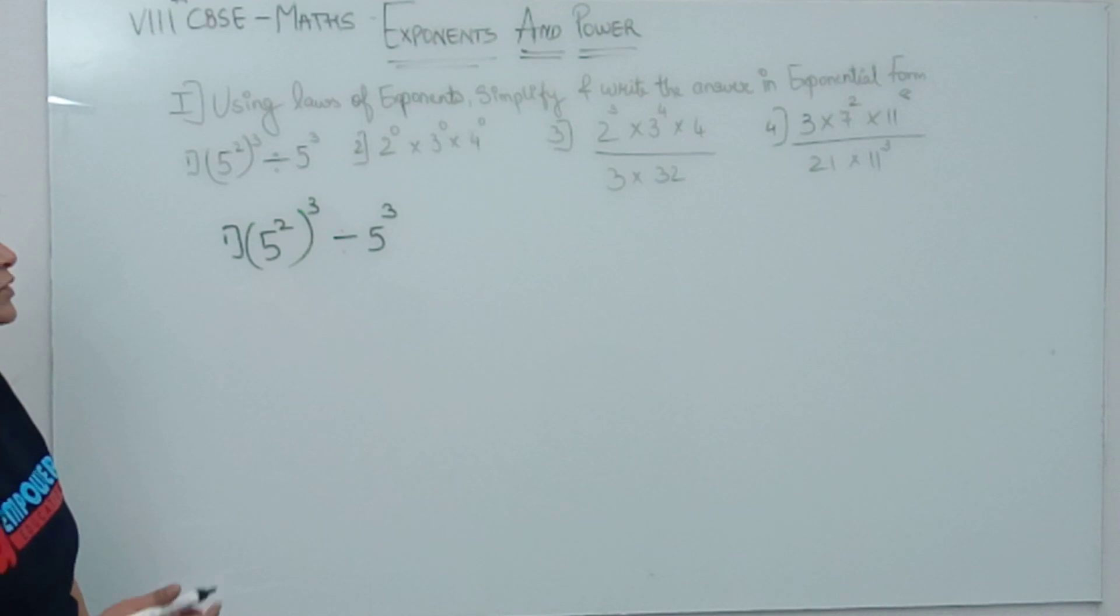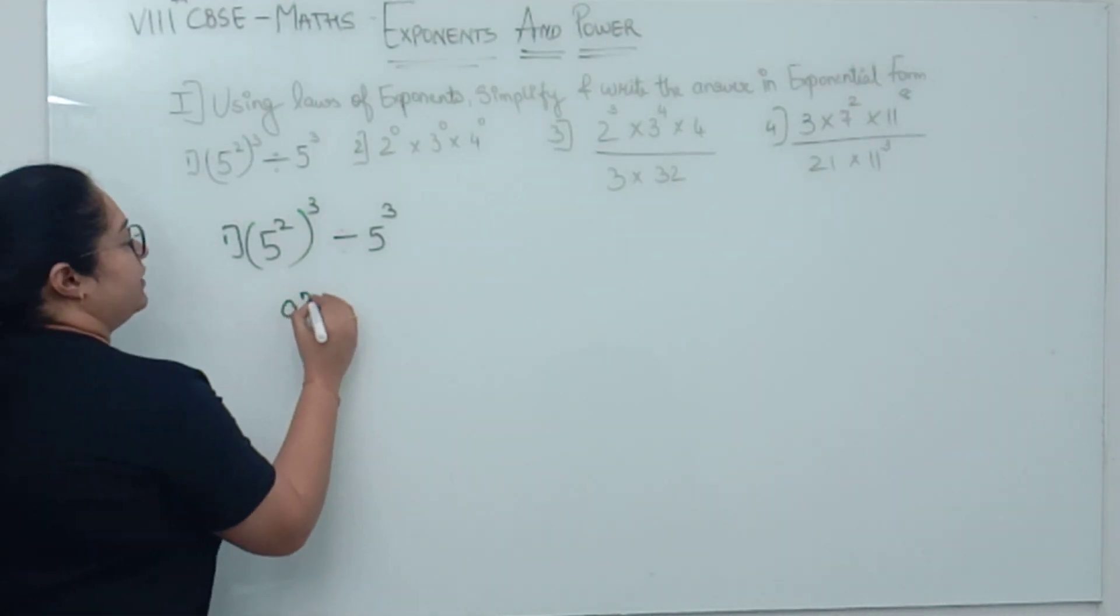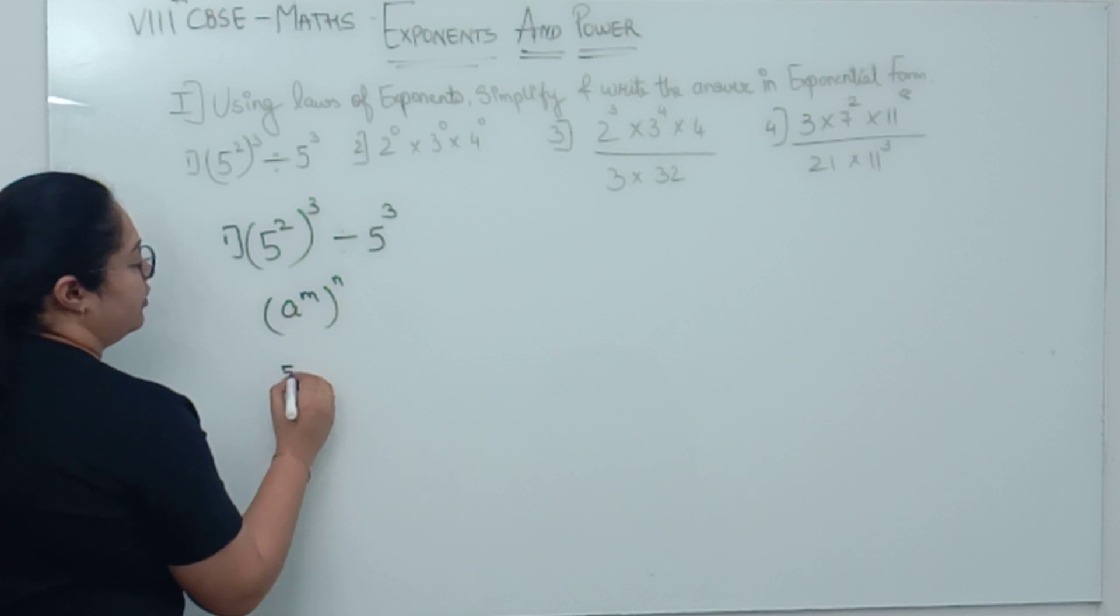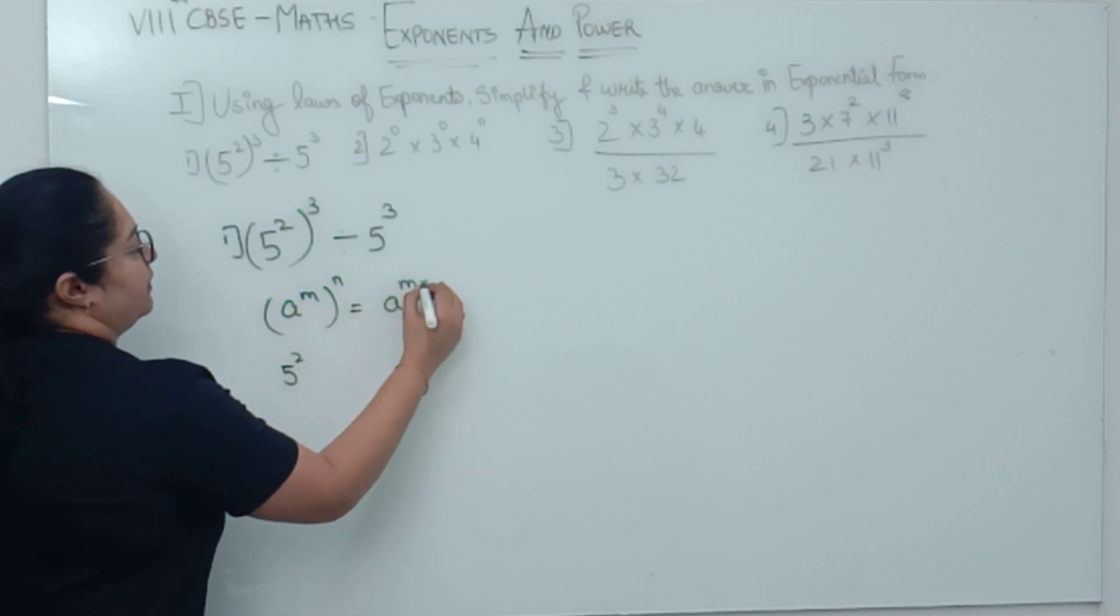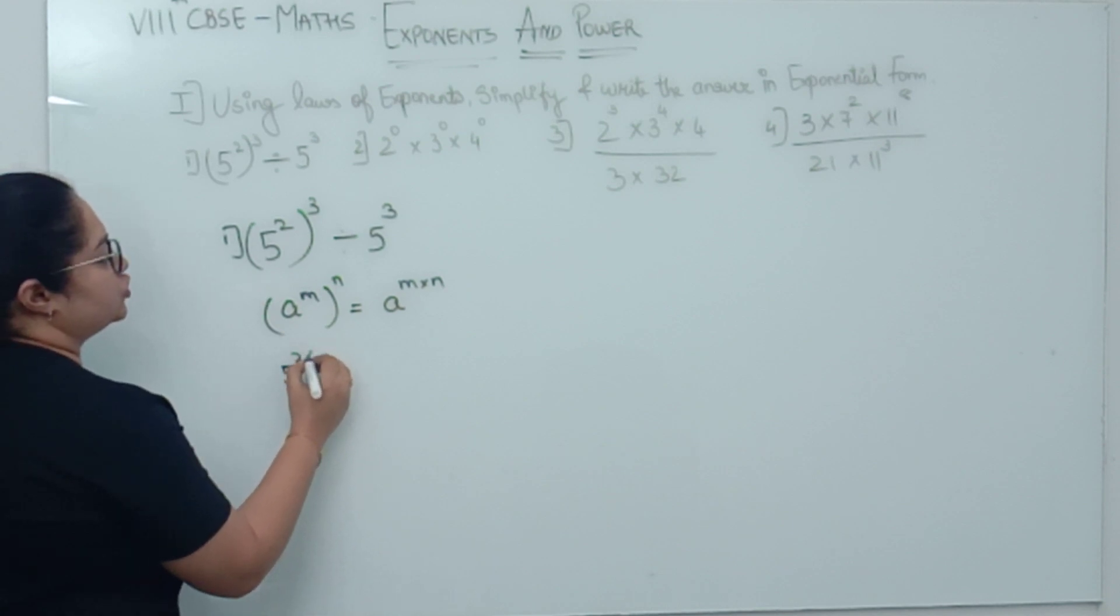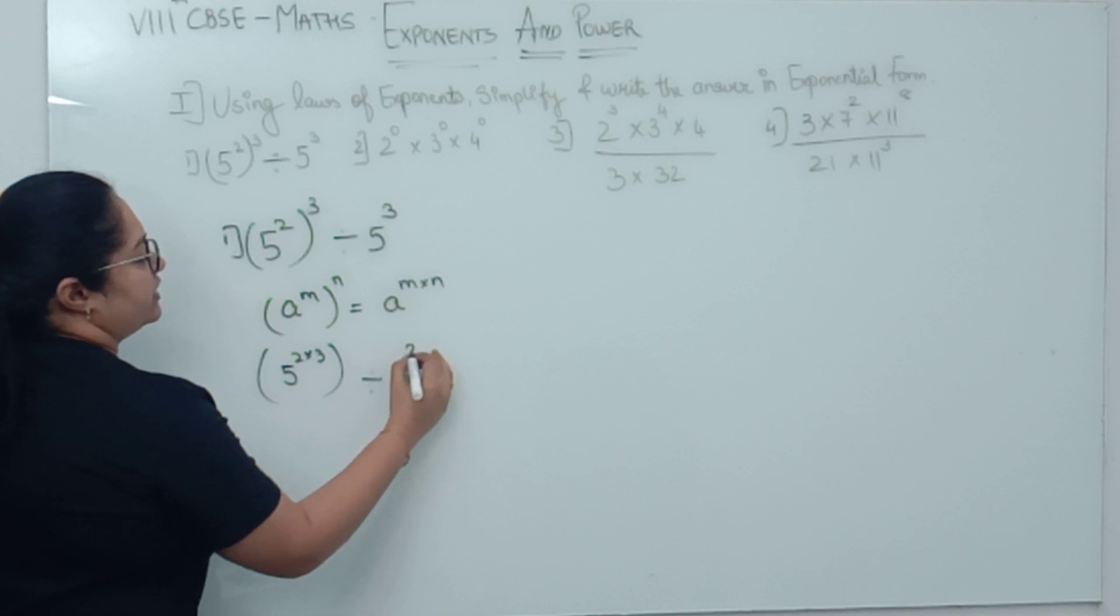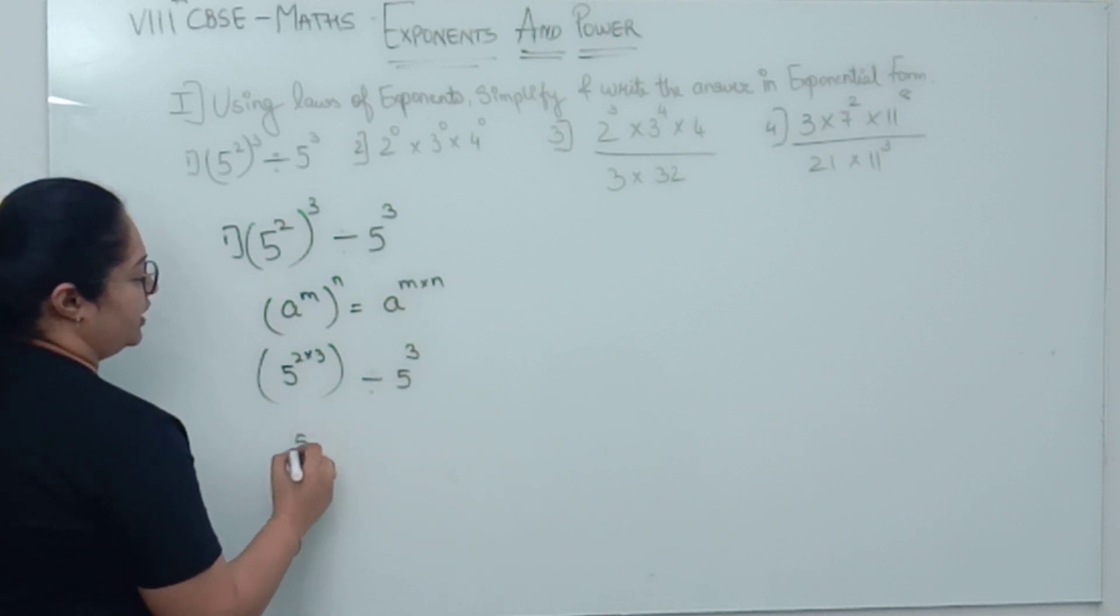First we need to simplify it. So, this is which law? a raised to m, the whole raised to n. So, what will happen? 5 raised to 2, a raised to m into n. So, 5 raised to 2 into 3, divided by 5 raised to 3. So now, 5 raised to 3, 2's are 6, divided by 5 raised to 3.